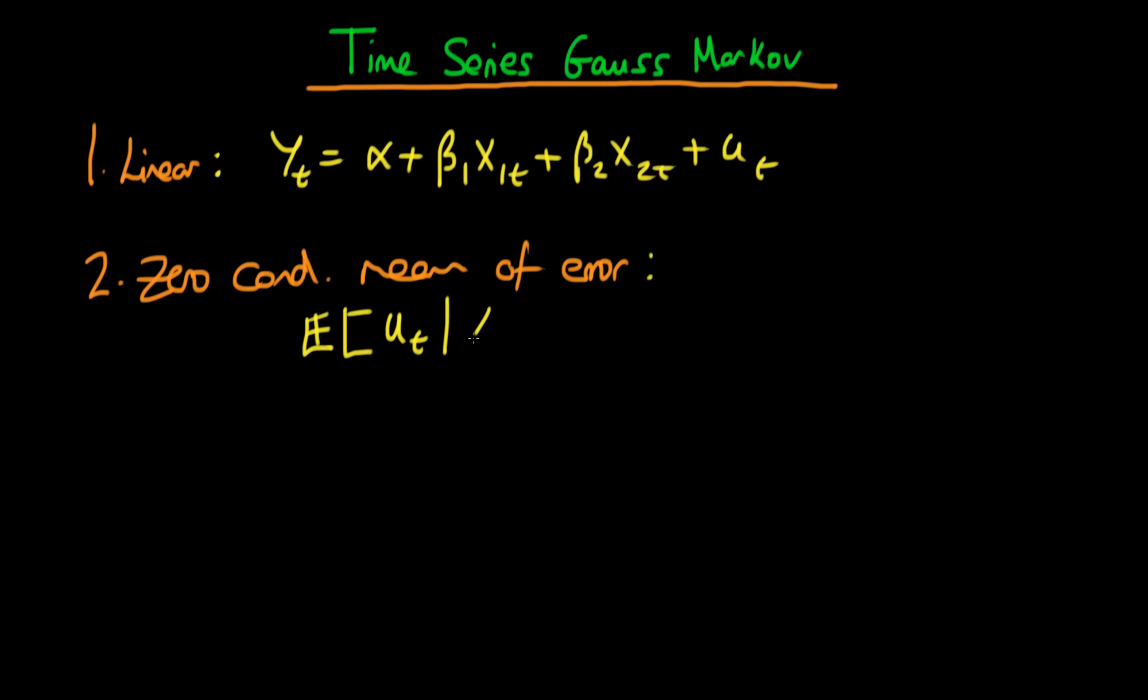So I'm going to write that as xjk where the j is indicative of the variable itself. So as you see up here I've got a 1 here for the first variable, the k is indicative of the time period. So this relationship has to hold for all time. We have to have that the expectation of ut given all different observations at all points in time has to be equal to zero.